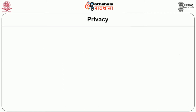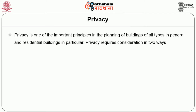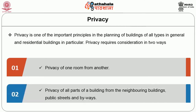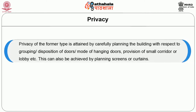The third most important principle is privacy. Privacy is one of the most important principles in the planning of all building types in general and residential buildings in particular. Privacy requires consideration in two ways: first, privacy of one room from another; and second, privacy of all parts of the building from neighboring buildings, public streets, and highways. Privacy of the first type is attained by careful planning with respect to grouping or disposition of doors, mode of hanging doors, provision of small corridors or lobbies, and by planning screens and curtains.